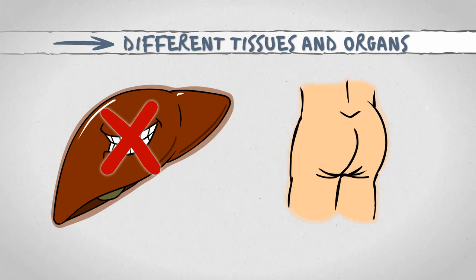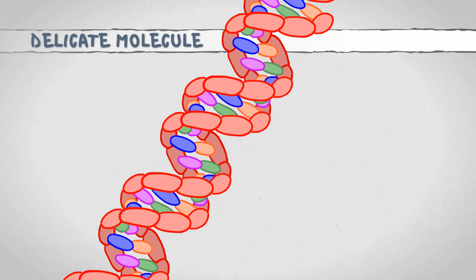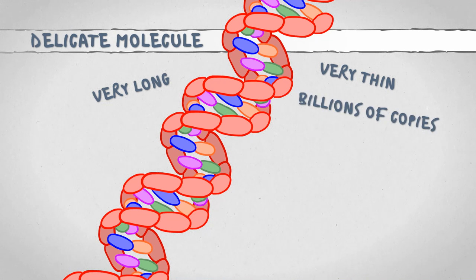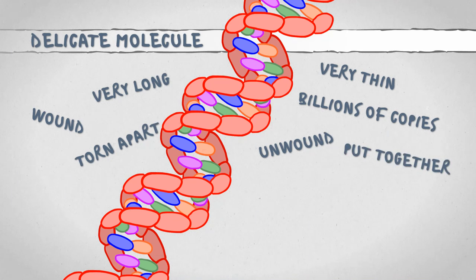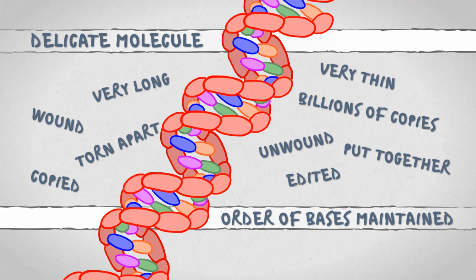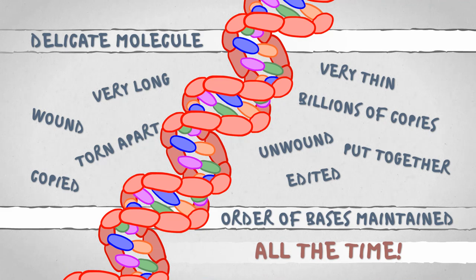So we have this incredibly delicate string that's about 2 meters long and 2 billionth of a meter wide, it exists in billions of copies across your body, it gets wound and unwound and torn apart and put back together and copied and edited 24-7, but its sequence of billions of bases has to be kept unchanged all the while. What could possibly go wrong?